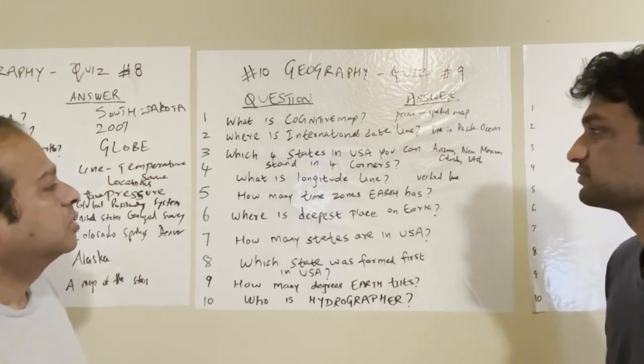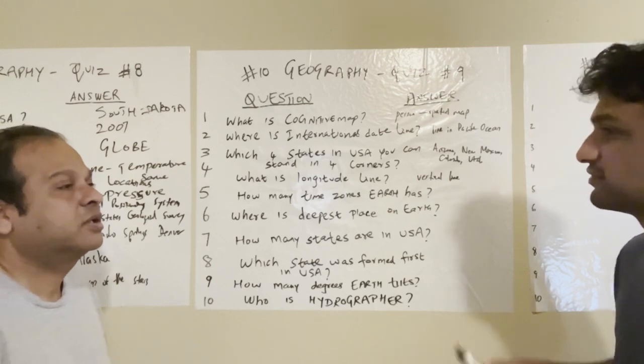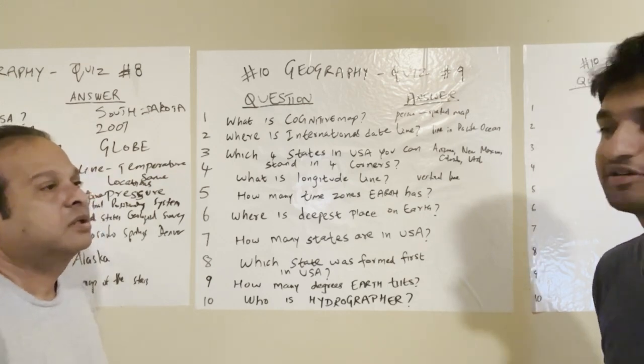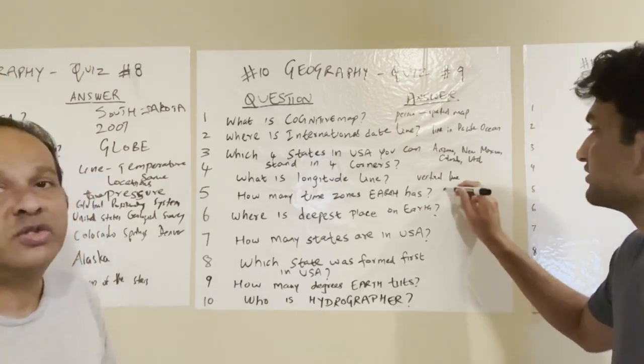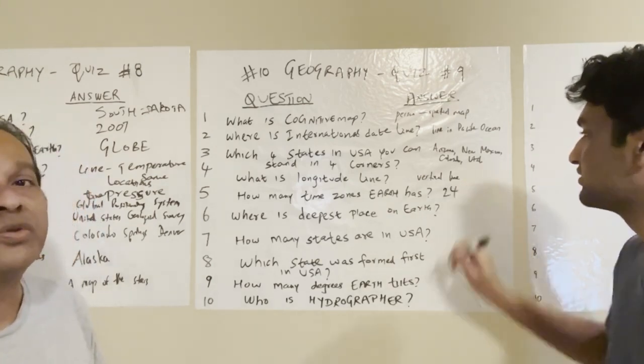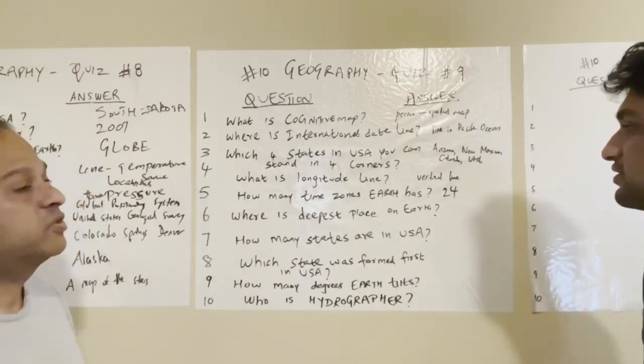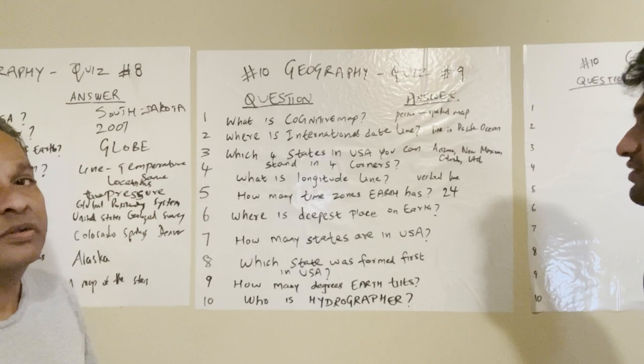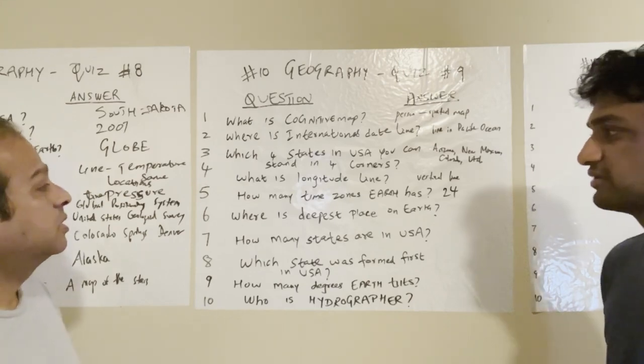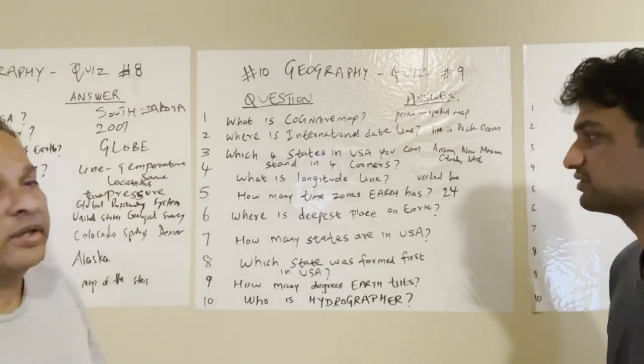How many time zones does the Earth have? 24. Earth has 24 time zones — 24 hours in a day.